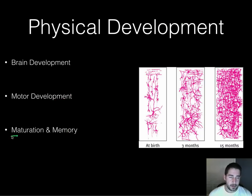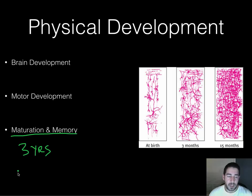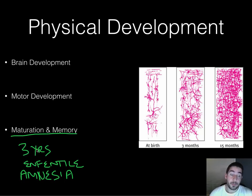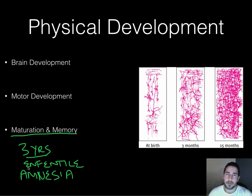Babies mature and develop memory, but anything before three years we have what's called infantile amnesia — you can't remember anything earlier than three years old, and if you think you do, it's probably not accurate. However, your brain is still learning, maturing, and remembering things whether you know it or not.